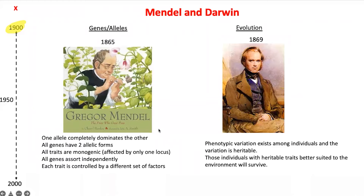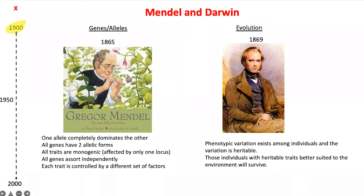Darwin had no clue about Mendel's work, because Mendel's work was in German and Mendel was a monk in a very small monastery. Darwin became fairly famous in UK scientific circles and was linked to most famous scientists, but obviously had no idea about what Mendel was doing.